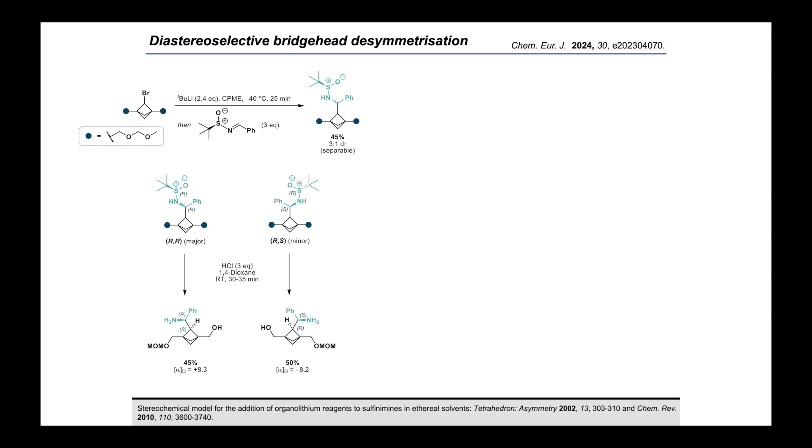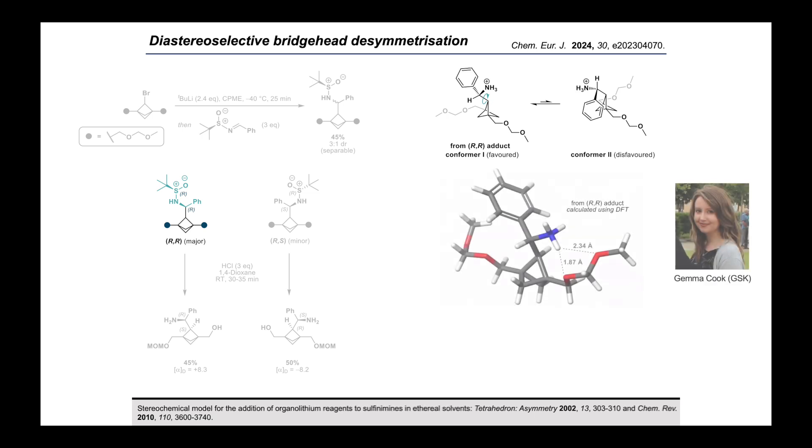We can account for this selective hydrolysis based on steric arguments. If we consider the amine that's derived from the major R,R diastereomer of the Ellman product, which will be protonated under the reaction conditions, then we can appreciate that this might have two general conformations in solution. So conformations of type 1, where the aromatic ring is extended away from the BCP core, are favored over conformations of type 2, where the two units are partially eclipsed. DFT studies, completed by my colleague Gemma, a scientific investigator here at GSK, show that the distance between the protonated amine and both of the oxygen atoms of the front MOM group, as drawn, is less than 2.5 angstroms, which is well within the range expected for a hydrogen bond.